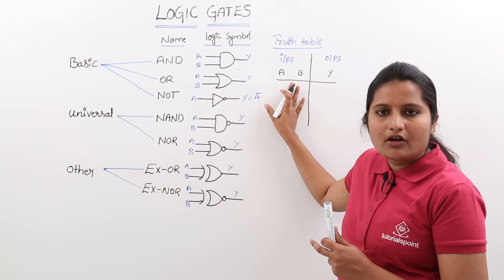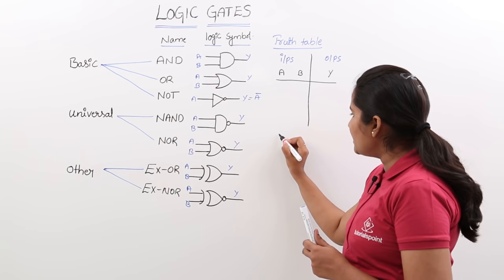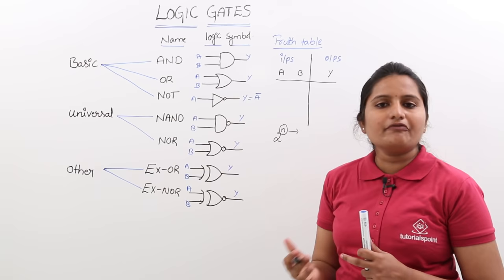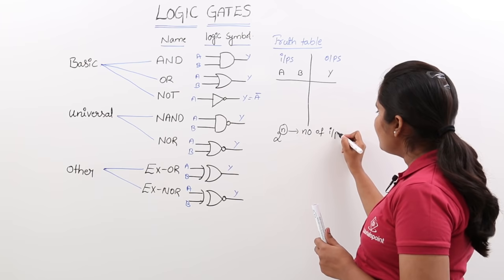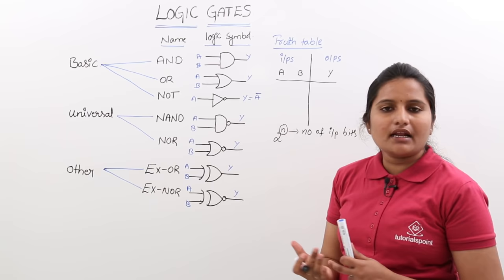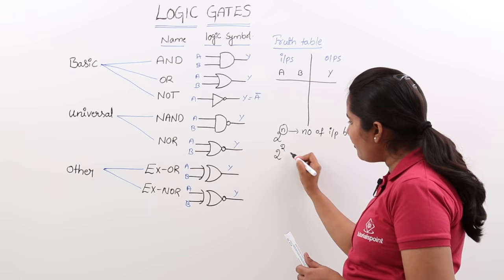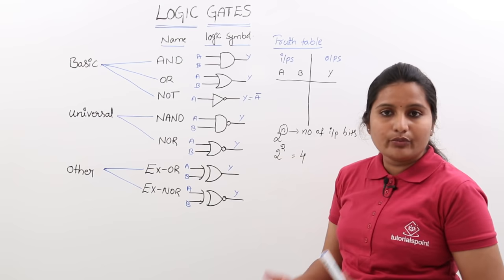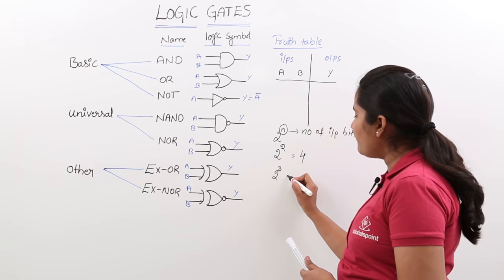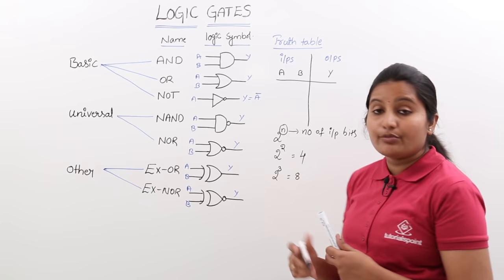The number of combinations is 2 to the power N, where N is equivalent to the number of input bits. For example, if you are taking a 2-input AND gate, the number of inputs is 2, so you may have 4 combinations. If you are having a 3-input gate, you may have 2-cubed combinations — that means 8 input combinations. With inputs A, B, C you will get 8 combinations.